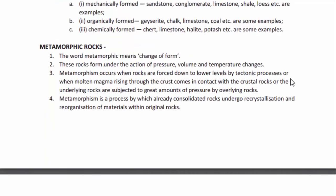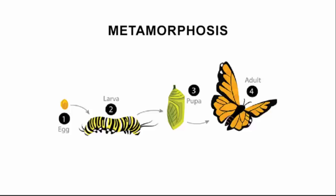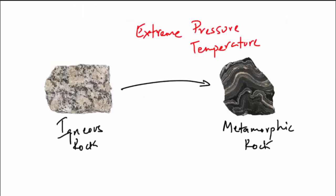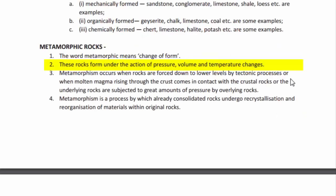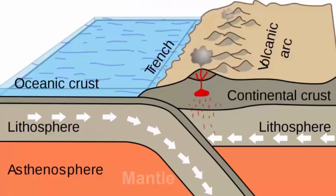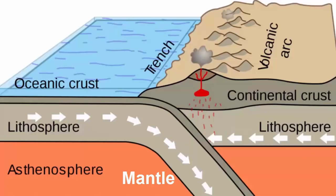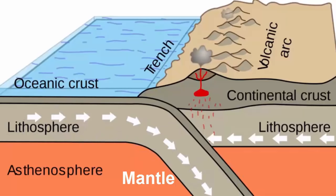The last division is metamorphic rock. The word metamorphic means change of form — just like metamorphosis, where a caterpillar transforms into a butterfly. These rocks change under the action of pressure, volume, and temperature. Tectonic movement refers to the movement of plates on which oceans and continents reside. At a convergent boundary, a smaller plate subducts under a larger one, pushing sedimentary and igneous rocks toward the mantle — under the crust — where pressure and heat cause them to become metamorphic.